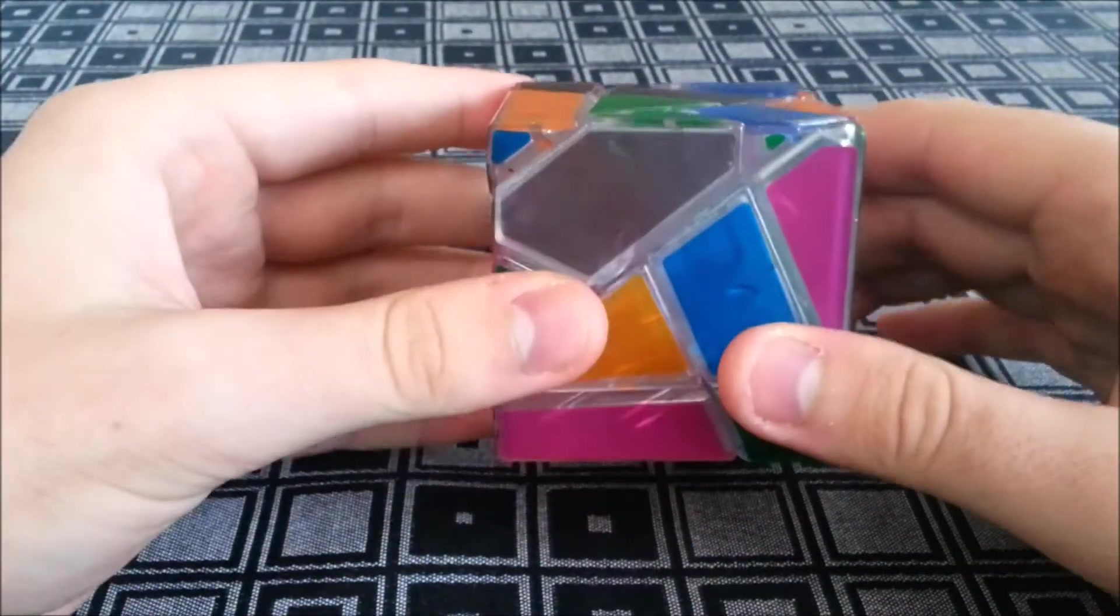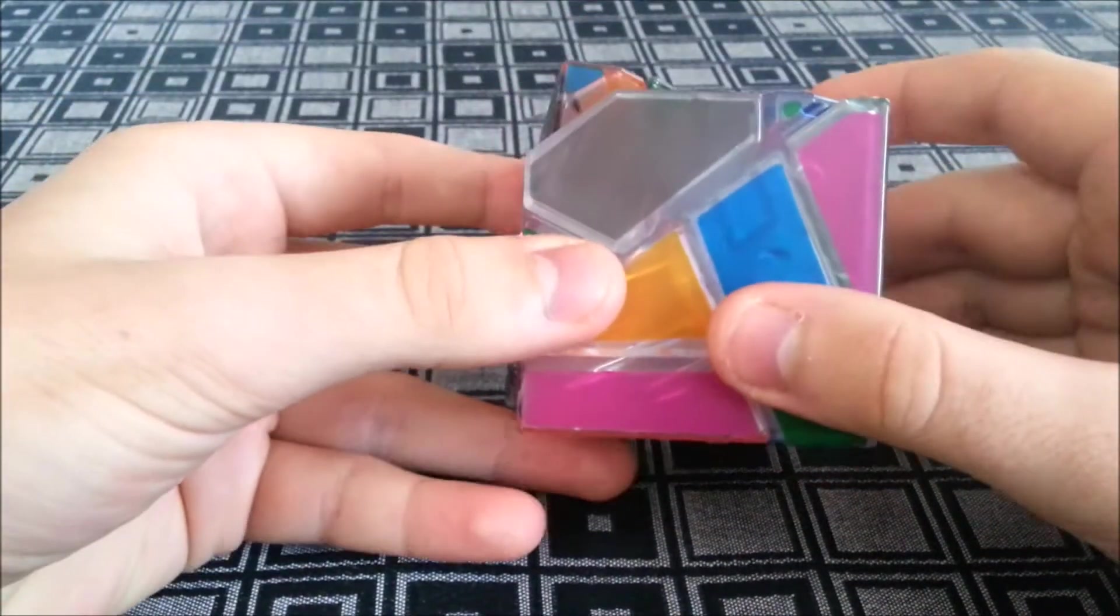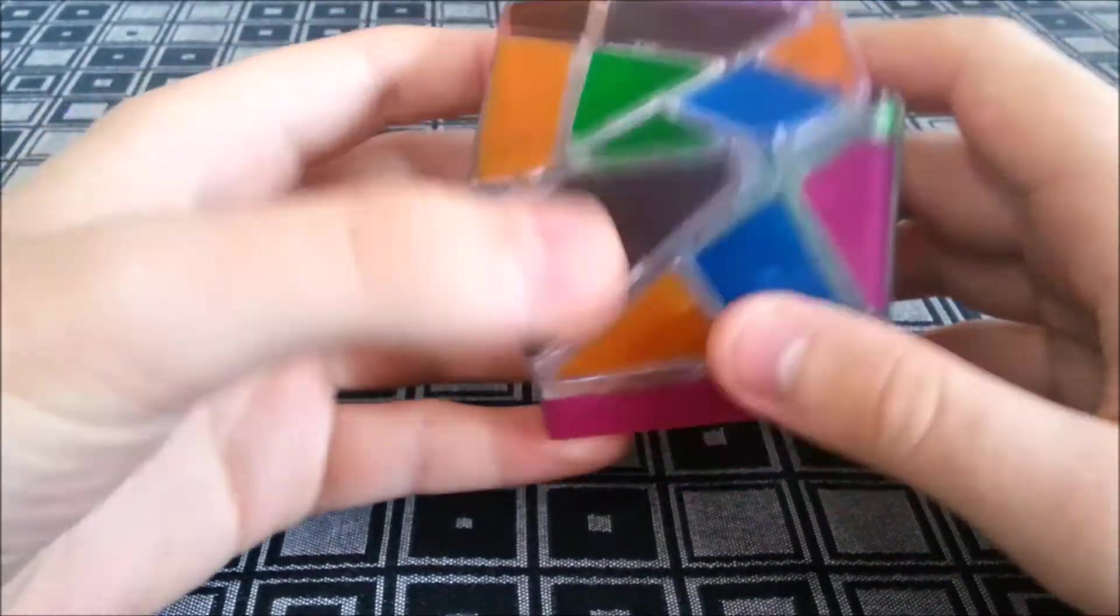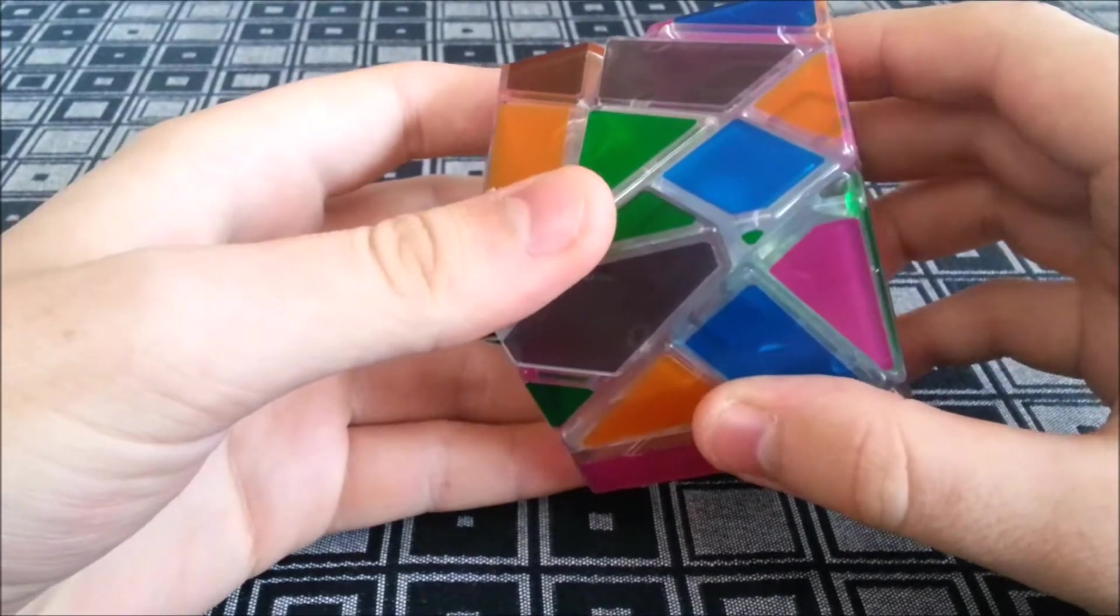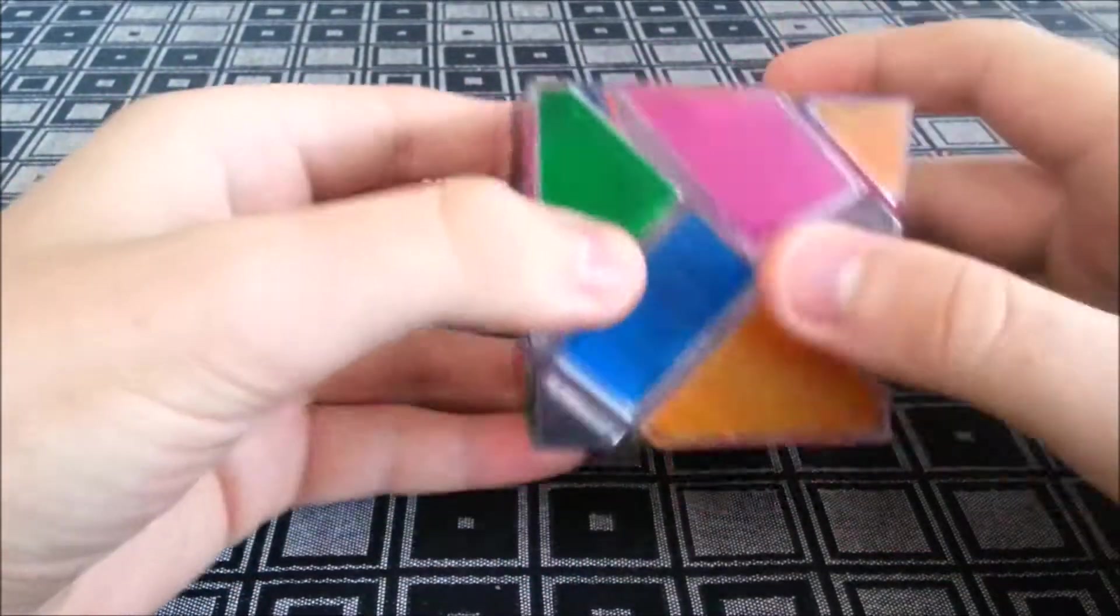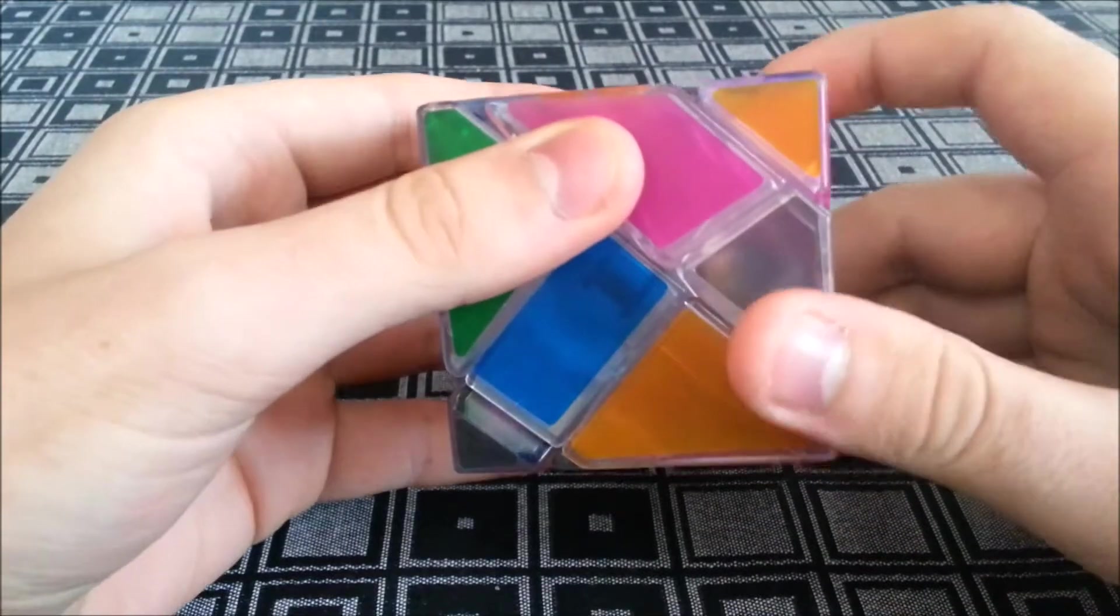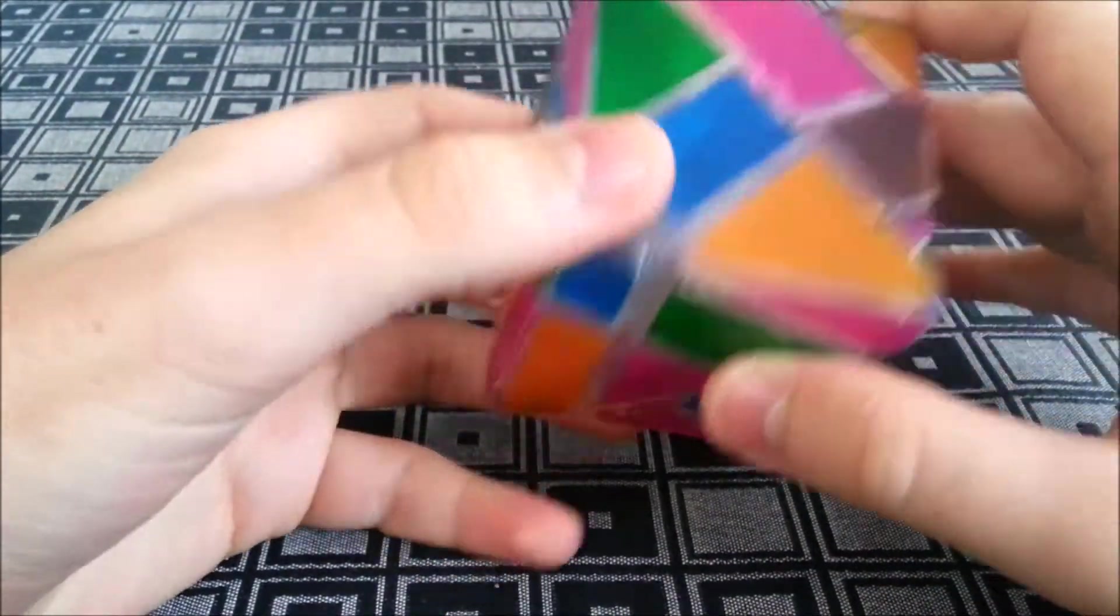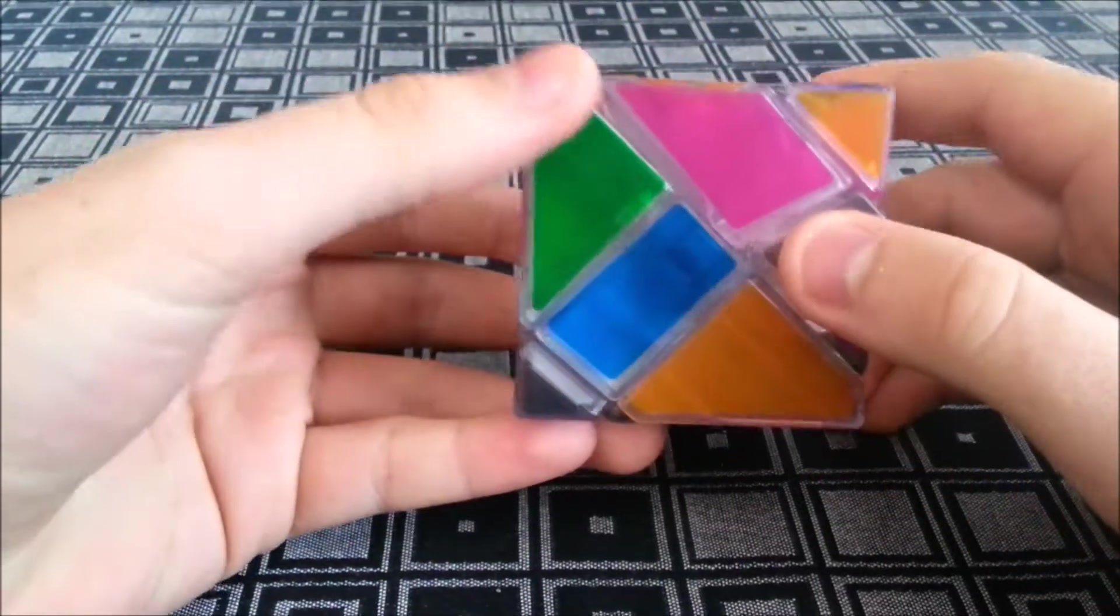Now Maxine lent me this cube because she noticed that even in its solved state it looks scrambled. So she gave it to me, or lent it to me, and asked me to see if there's another state where all the sides are the same color. Now I have come to the conclusion that that is not possible.